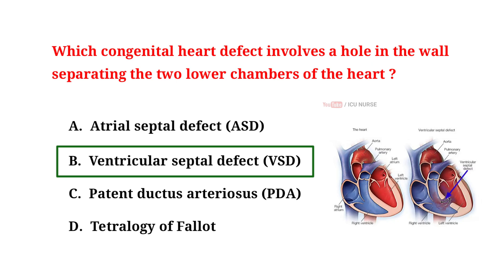The congenital heart defect involving a hole in the wall separating the two lower chambers of the heart is called a ventricular septal defect. This defect allows oxygenated blood to mix with deoxygenated blood between the left and right ventricles. This can lead to increased blood flow to the lungs, causing respiratory issues and heart enlargement. Depending on the size and location of the hole, treatment may range from monitoring to surgical repair.